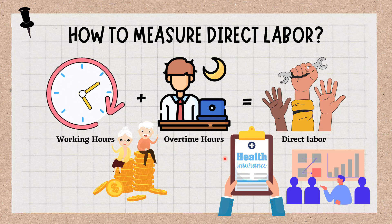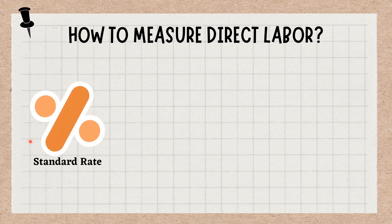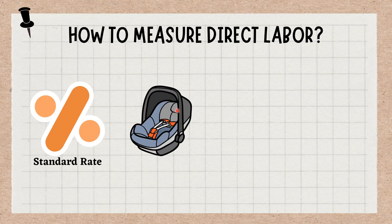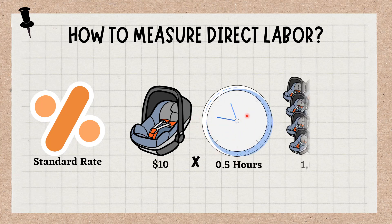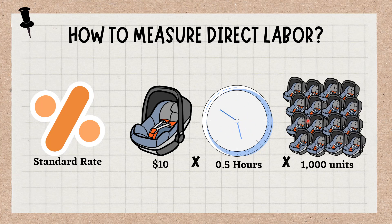Most companies establish a standard rate per hour that gives an estimate of what they expect to be the direct labor cost in normal conditions. For example, assume that the direct labor cost per hour for assembling baby car seats is $10, and the company expects to use 0.5 hours for the assembly of each car seat. If the company produces 1,000 units, the standard direct labor cost will be $10 multiplied by 0.5 multiplied by 1,000, which equals $5,000.